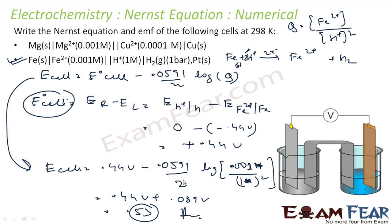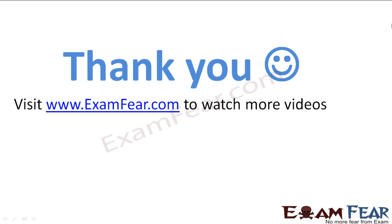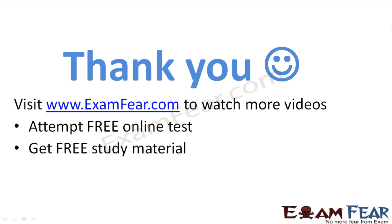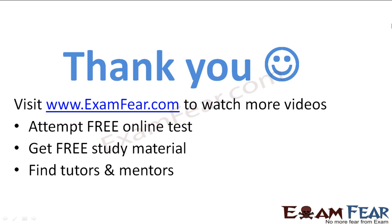This is because the log of 0.001 equals log of 10⁻³, which equals minus 3. So minus 3 times minus gives a plus, and multiplying 0.0591 by 2 and then by 3 gives 0.089. Thank you. Visit examfear.com to watch more videos, attempt free online tests, get study materials, find tutors and mentors, and much more.